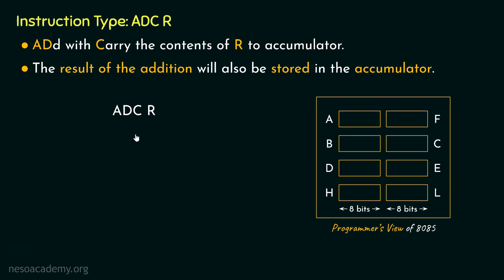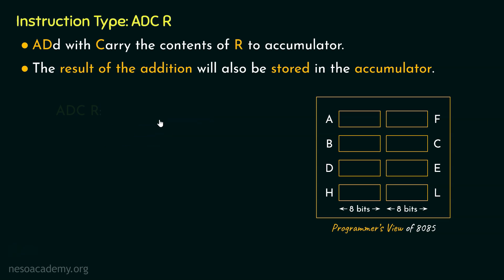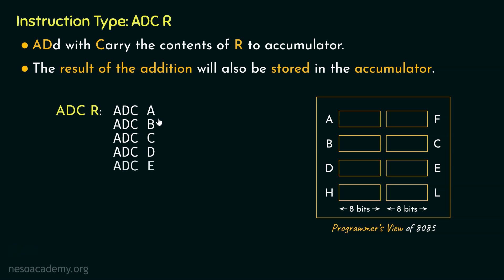Size-wise, ADCR falls into the 1-byte long instruction category. Now let me tell you about the different instructions of this type. Since we are considering capital R, the instructions are: ADCA, and then replacing A with all the different GPRs starting from B through L. Additionally, if we consider the memory element pointed by the HL register pair, there are 8 instructions in total of the ADCR type.